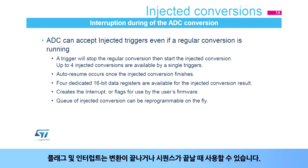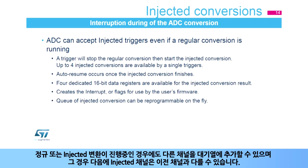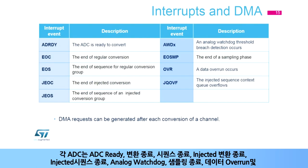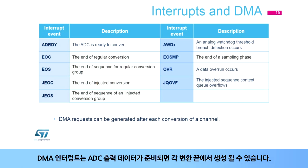Flags and interrupts are available for the end of conversion or end of sequence. The choices for an injected channel can be reprogrammed on the fly — even if a regular or injected conversion is in progress, you can add a different channel to the queue so that the next injected channel can be different from the previous one. Each ADC can generate nine different interrupts: ADC ready, end of conversion, end of sequence, end of injected conversion, end of injected sequence, analog watchdog, end of sampling, data overrun, and overflow of the injected sequence context queue. DMA requests can be generated at each end of conversion when the ADC output data is ready.